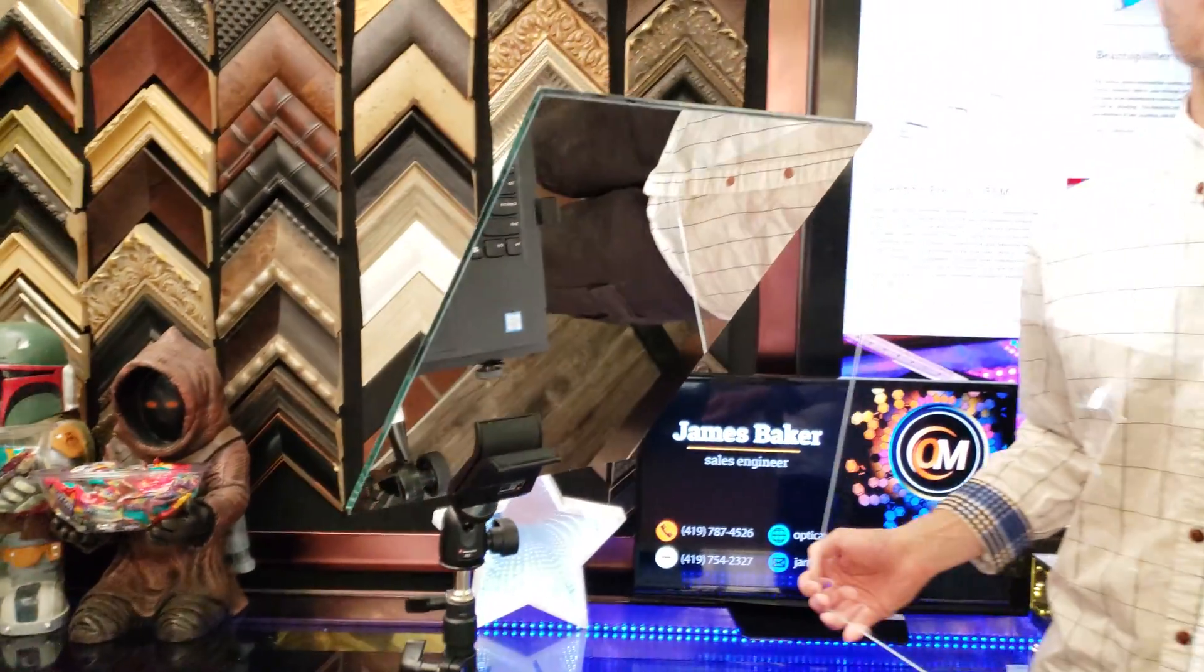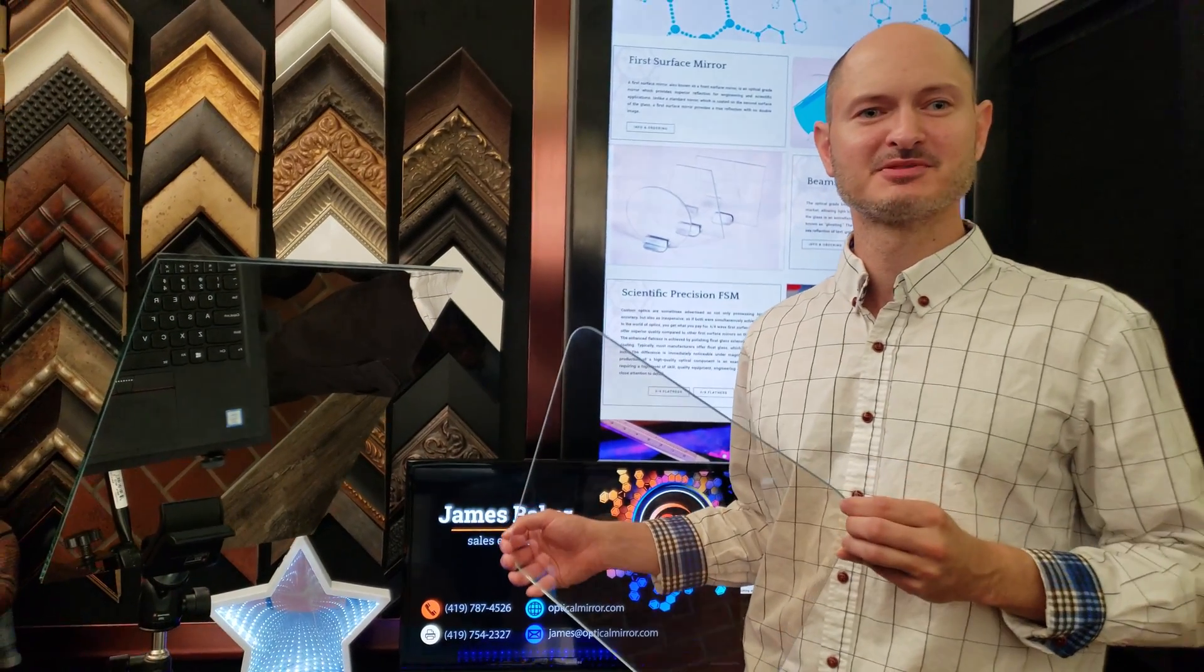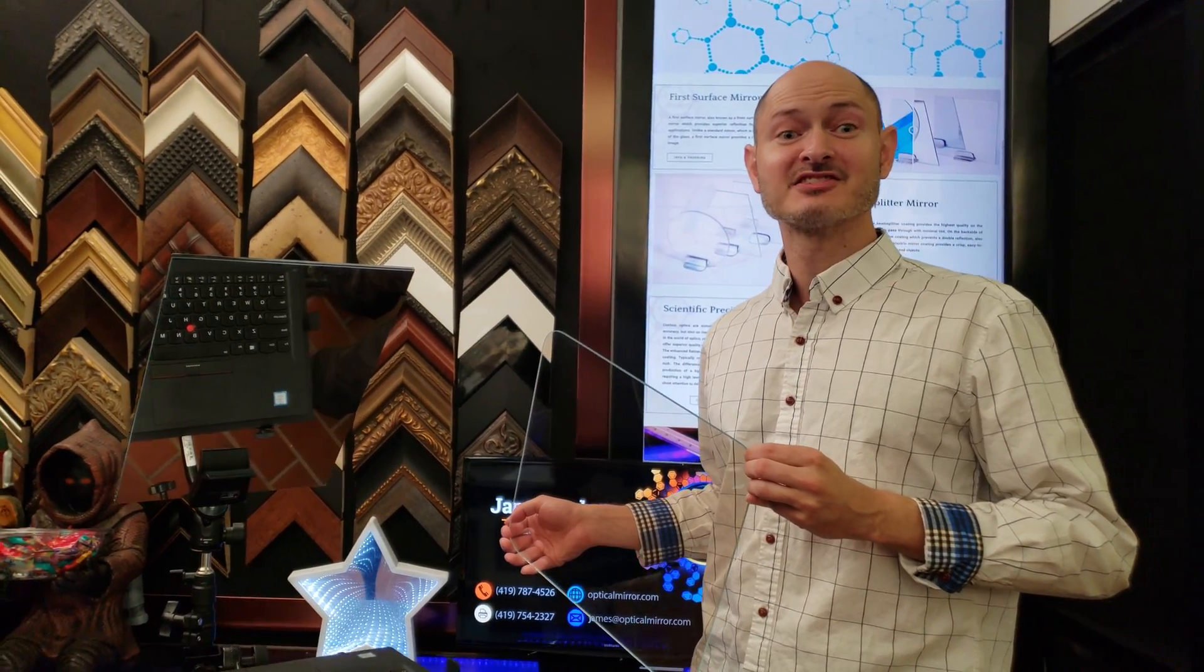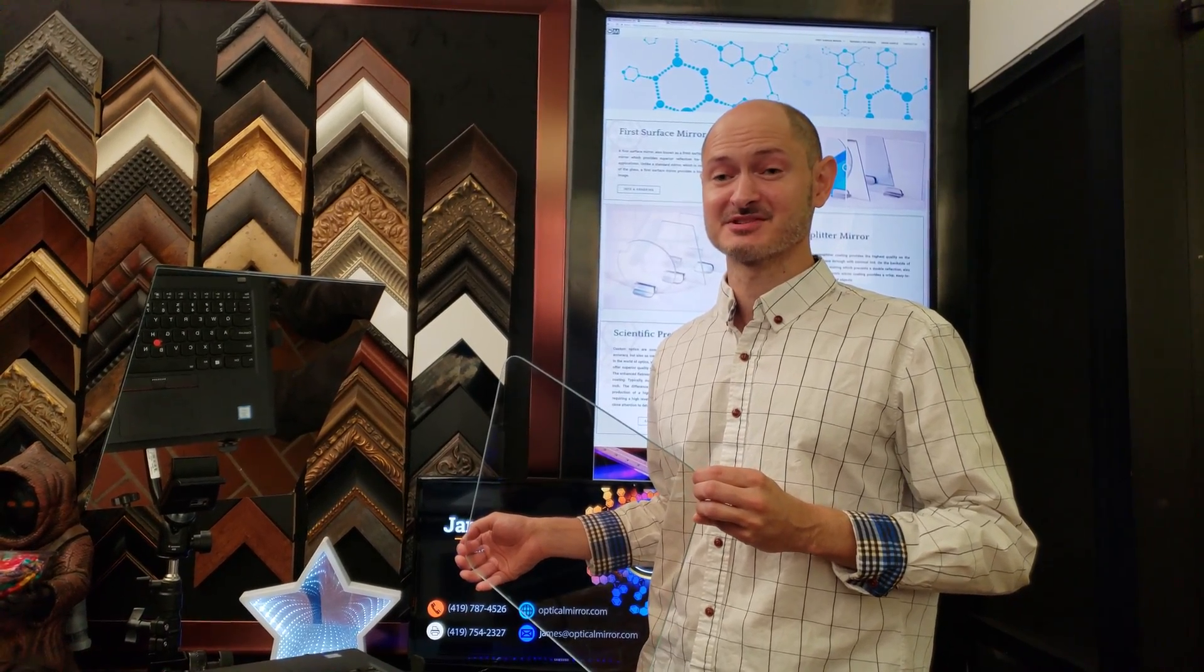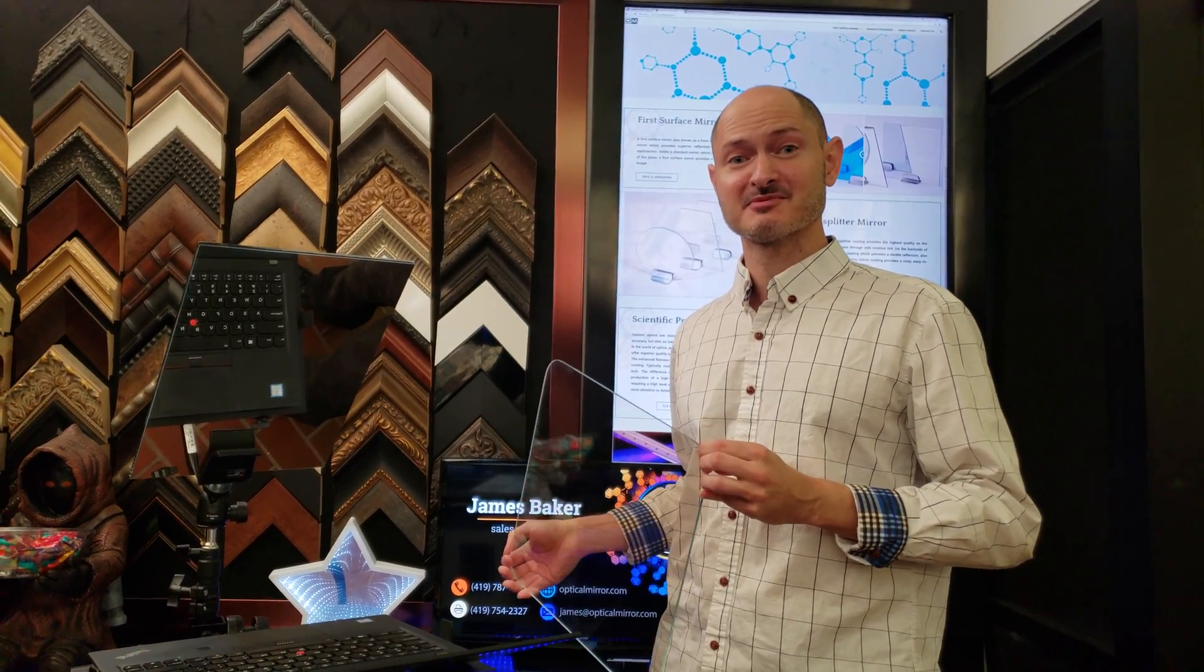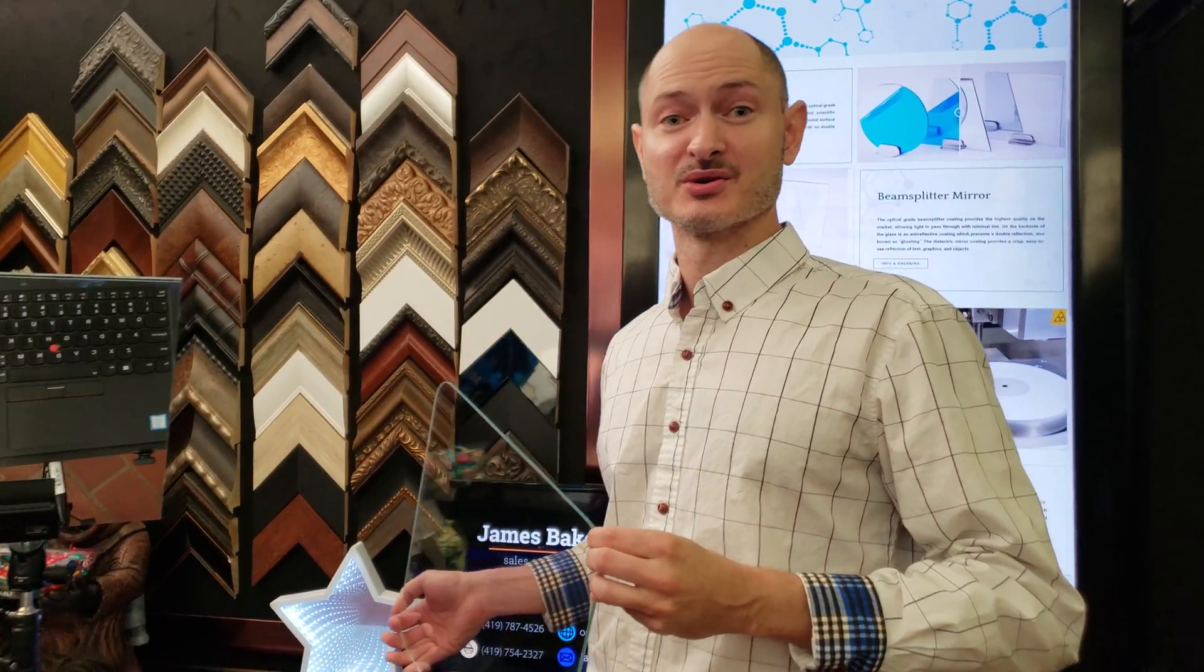Now the other way you can flip your screen is with a beam splitter mirror. Obviously the advantage of this is you can see through it while flipping your screen at the same time, in case you want to put a camera behind it and record through it or use it on stage.